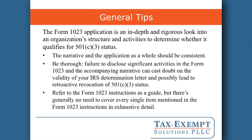You should also be thorough. Failure to disclose significant activities in the Form 1023 and the narrative can cast doubt on the validity of your IRS determination letter. It can be very tempting to leave out activities that you think might make it more complicated or could jeopardize your chances of qualifying, but that's not a good idea. The IRS at a later date could retroactively revoke your 501c3 status. So all of your activities should be described.